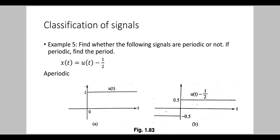Find whether the following signals are periodic or not. If periodic, find the period. x(t) = u(t) − 1/2. By plotting the waveform of u(t) − 1/2, we can say that it is a non-periodic signal or aperiodic signal.